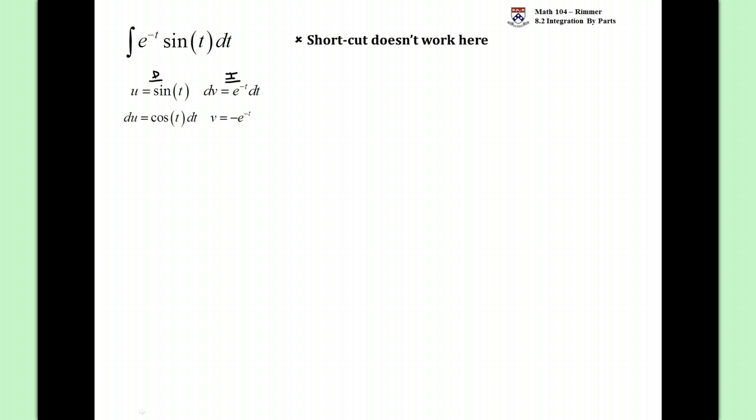Remember, the integral of e to the kt is 1 over k e to the kt. So when we have a negative 1 up there, there's going to be a negative 1 outside. Okay, great.